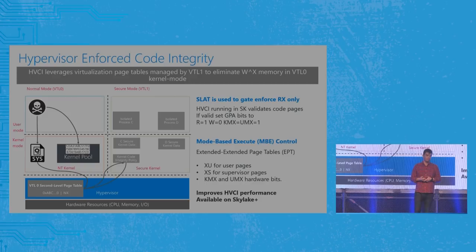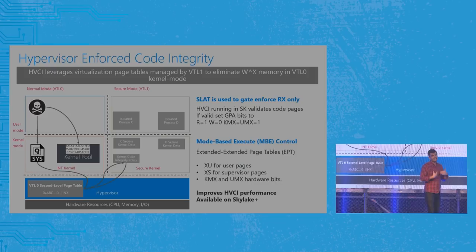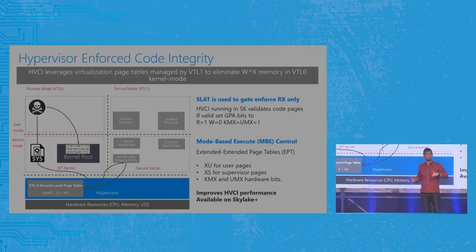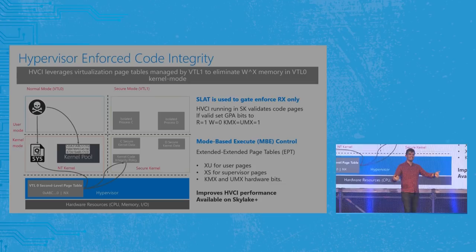The way we do that today uses two hardware technologies. The first is SLAT — Second Level Address Translation — which allows the hypervisor to gatekeep any requested page access for execute, read, and write, and apply policies. Essentially the kernel is no longer the gatekeeper of its own memory — it has to ask the hypervisor for permission. That makes even a kernel-level attacker — an administrator — unable to just map anything into memory that they want.